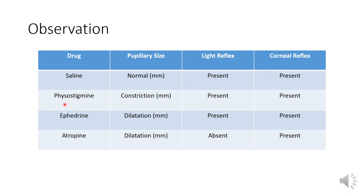In case of Physostigmine, which is a cholinergic drug, it causes constriction of the pupil. Light reflex and corneal reflex are present.